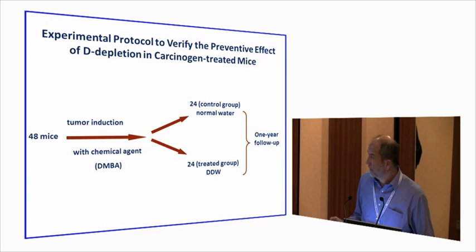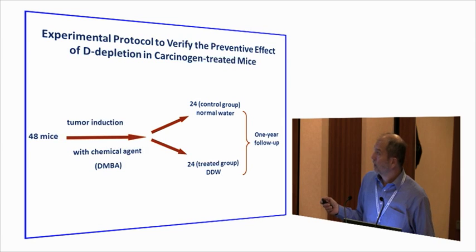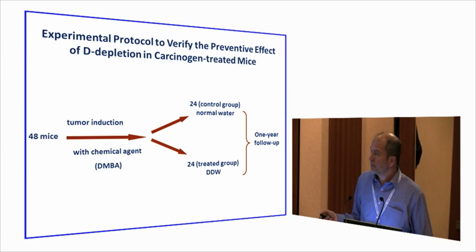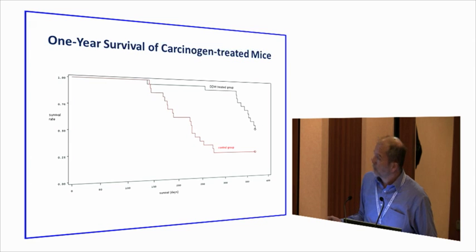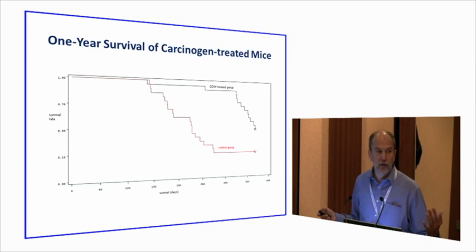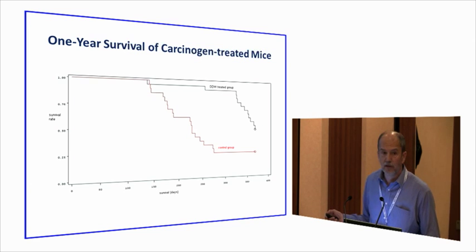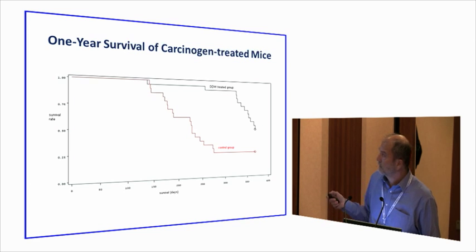We also did a long-run study using the same carcinogen agent on 48 mice: 24 consuming normal water, 24 consuming DDW. After 150 days, tumors appeared in the control group and we lost 18 animals. In the treated group, we lost only two animals by the time we stopped giving DDW.